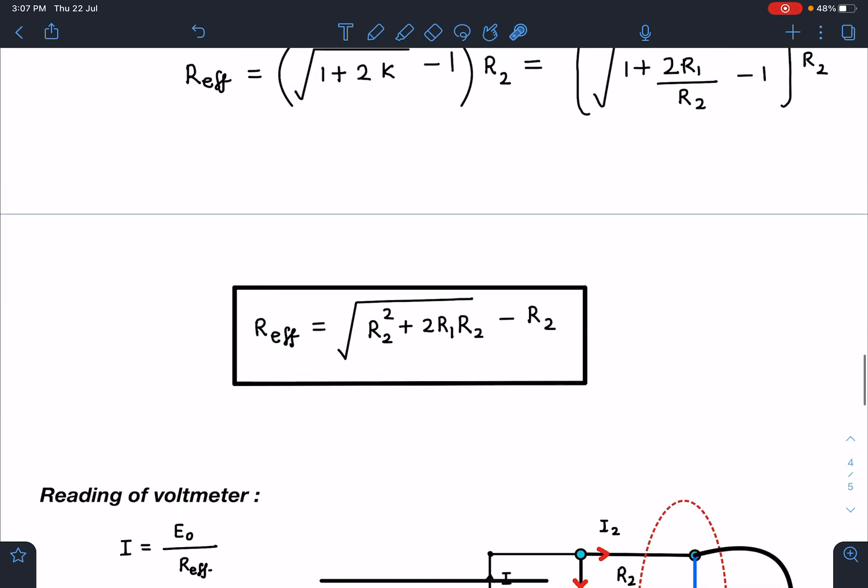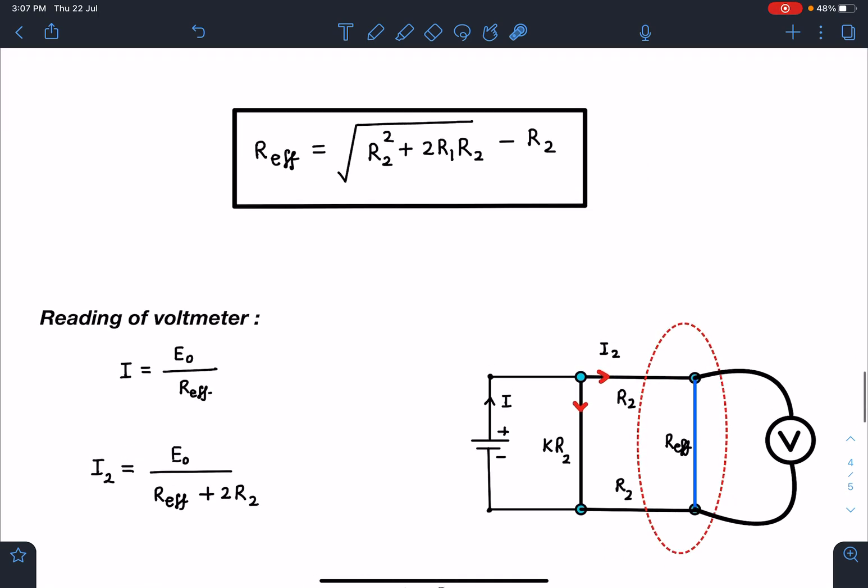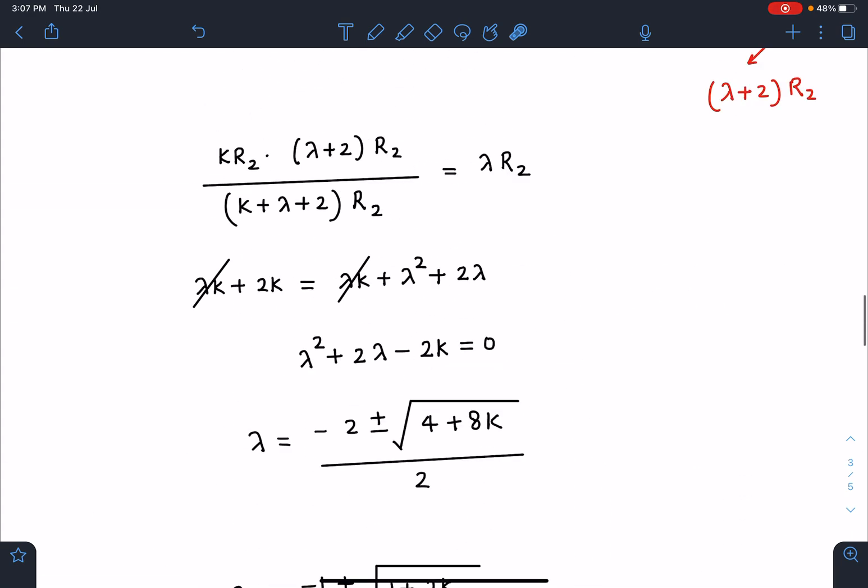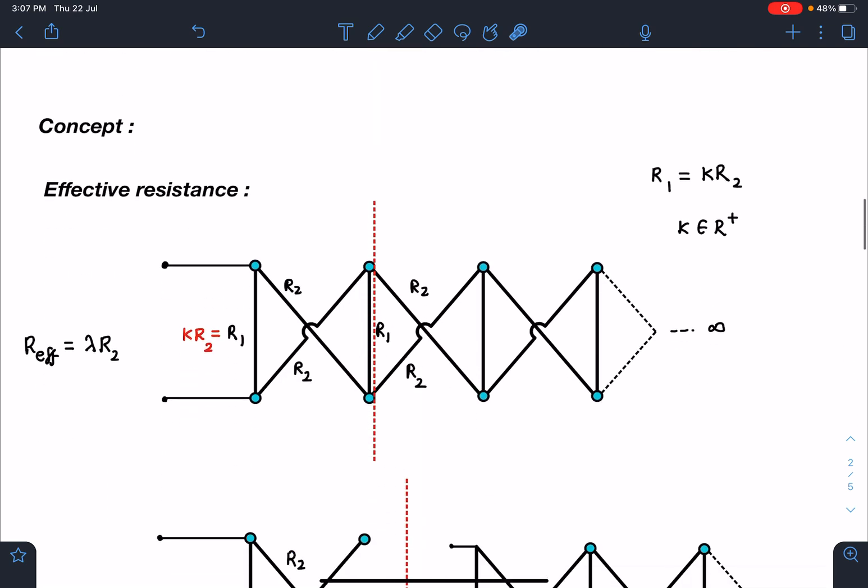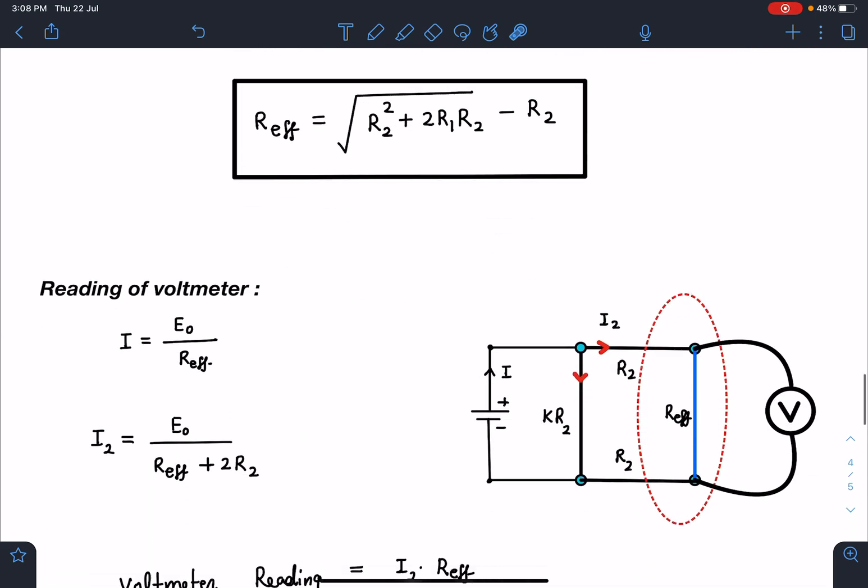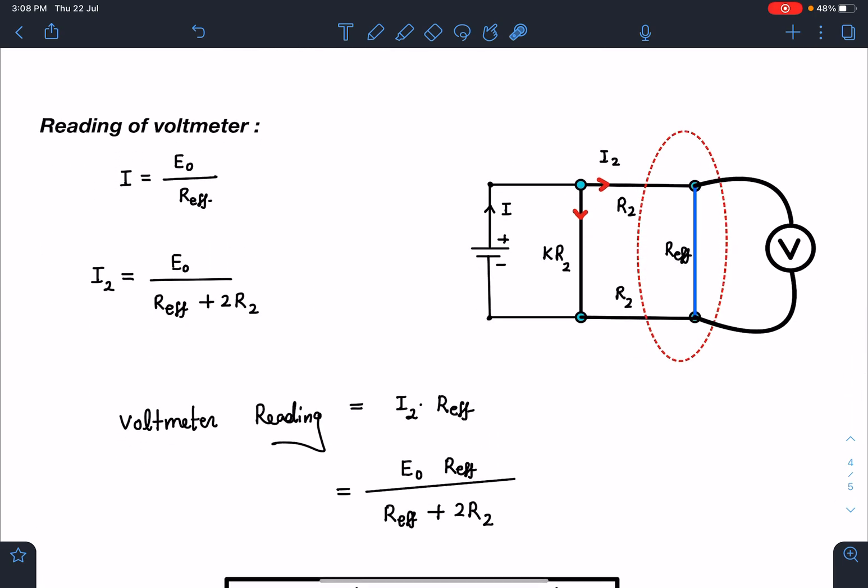Now the final point: for the reading of voltmeter, this becomes very easy. Voltmeter is connected across this R effective. You can see here in the original diagram, this entire part, if I take it, the voltmeter is connected across it. So I can say I have to find out the effective potential difference across this grid. Now when I do this, this is the new circuit. You can see kR2, and these two are in parallel here. It's an ideal voltmeter, so it will not be withdrawing any current. Total current supplied by the battery and the current reaching here is simply E0 by R effective plus 2R2.